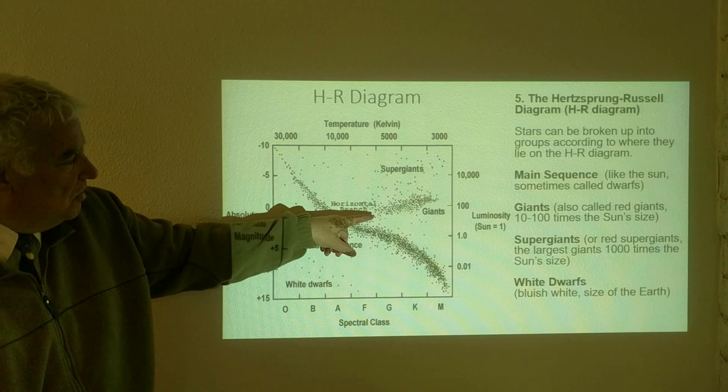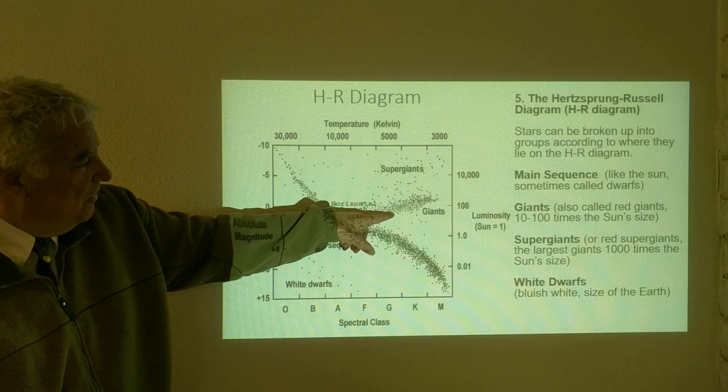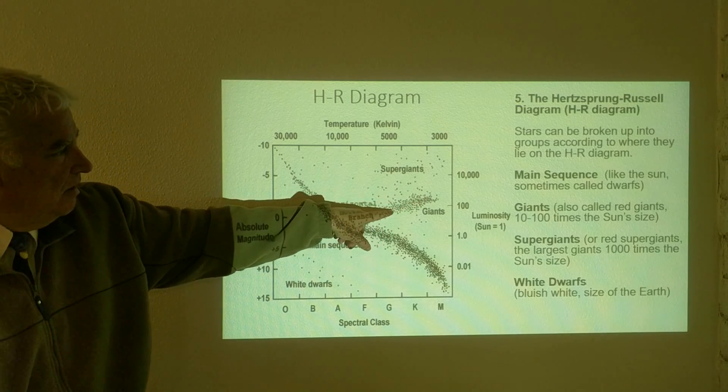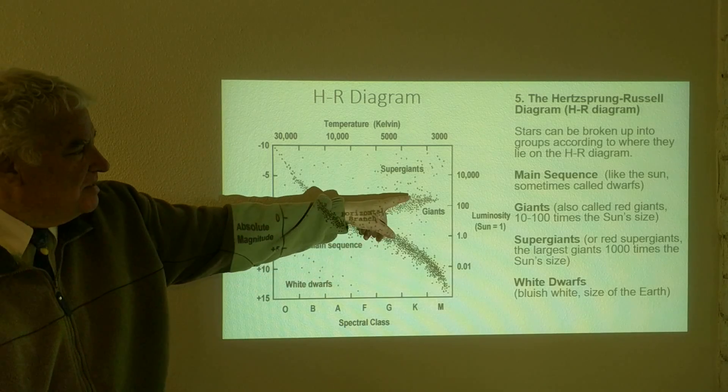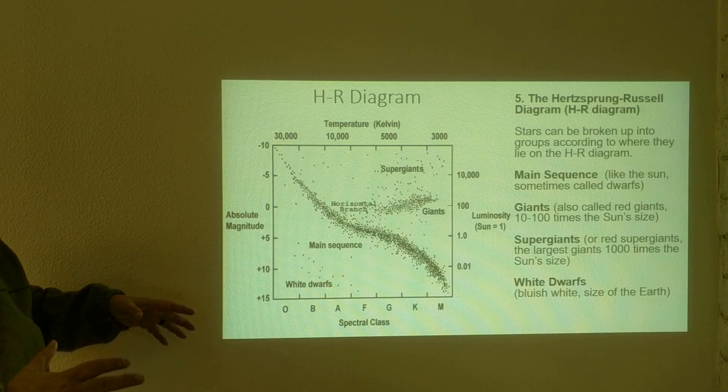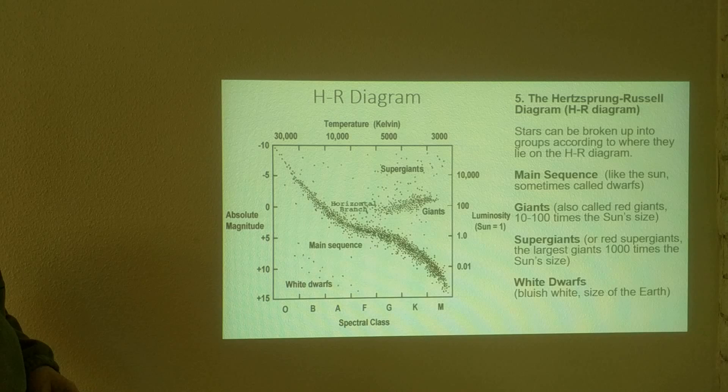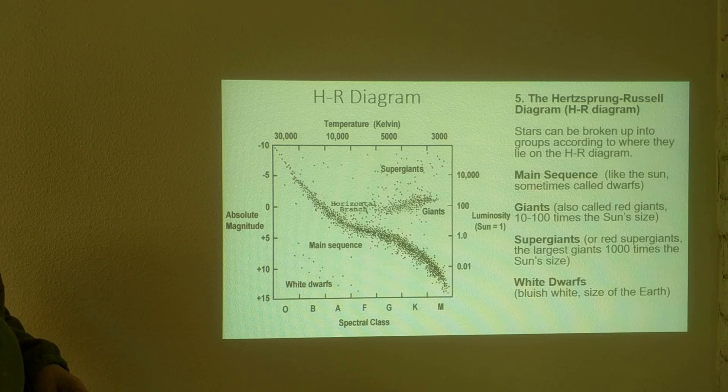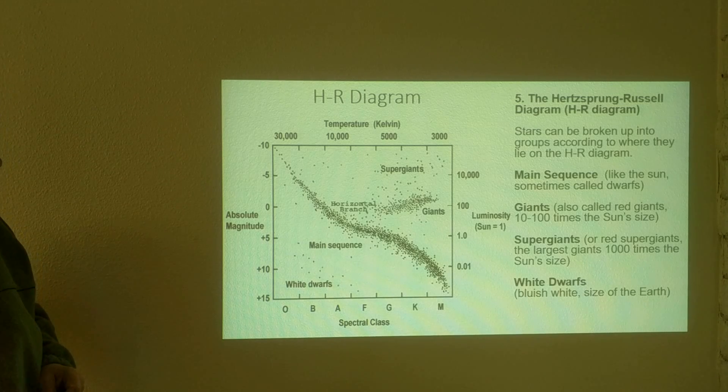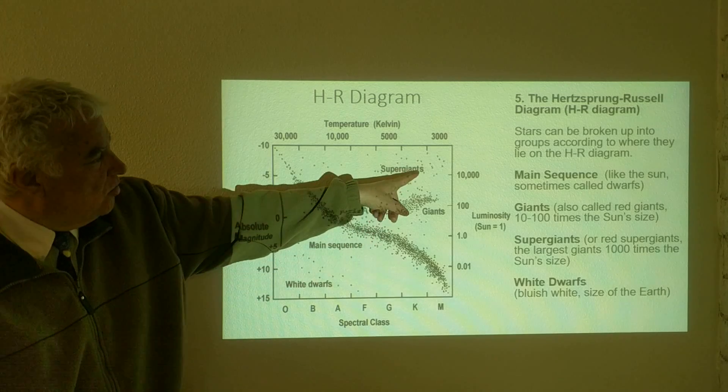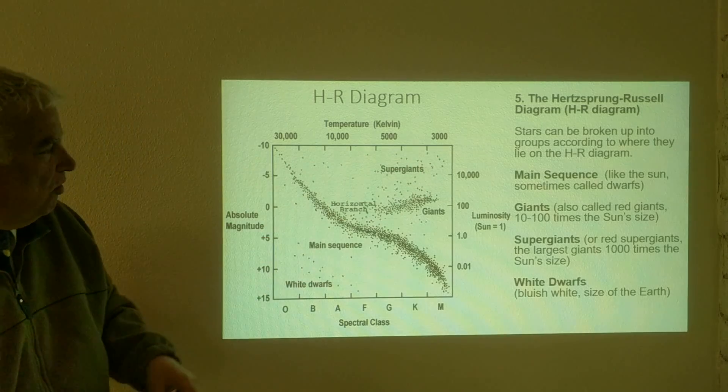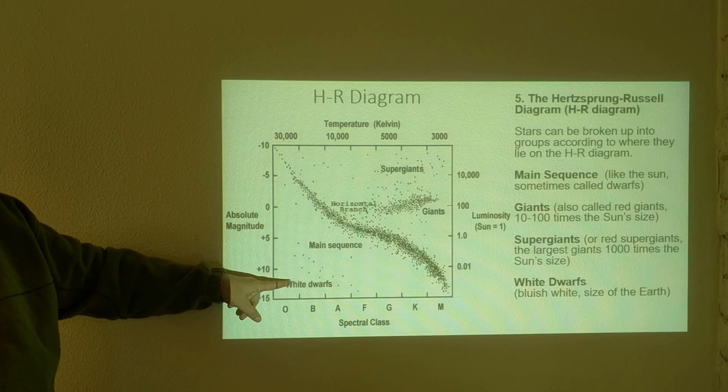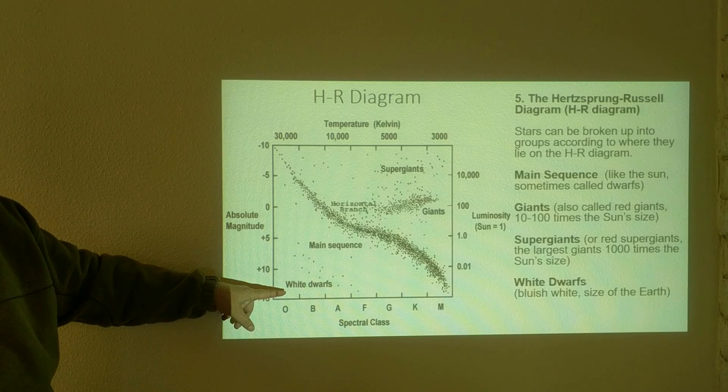Some of the other star groupings that we have are called the giants. And the giants are about 10 times to 100 times the size of the sun. One thing that we learn about this diagram is that size increases as you move toward the top right corner and decreases towards the bottom left corner.